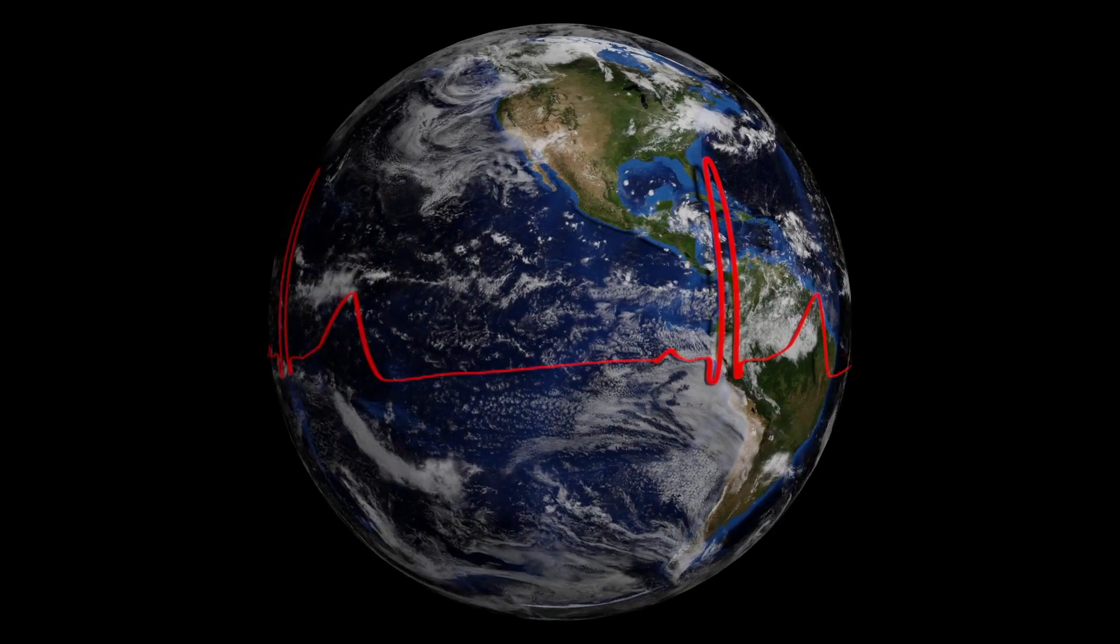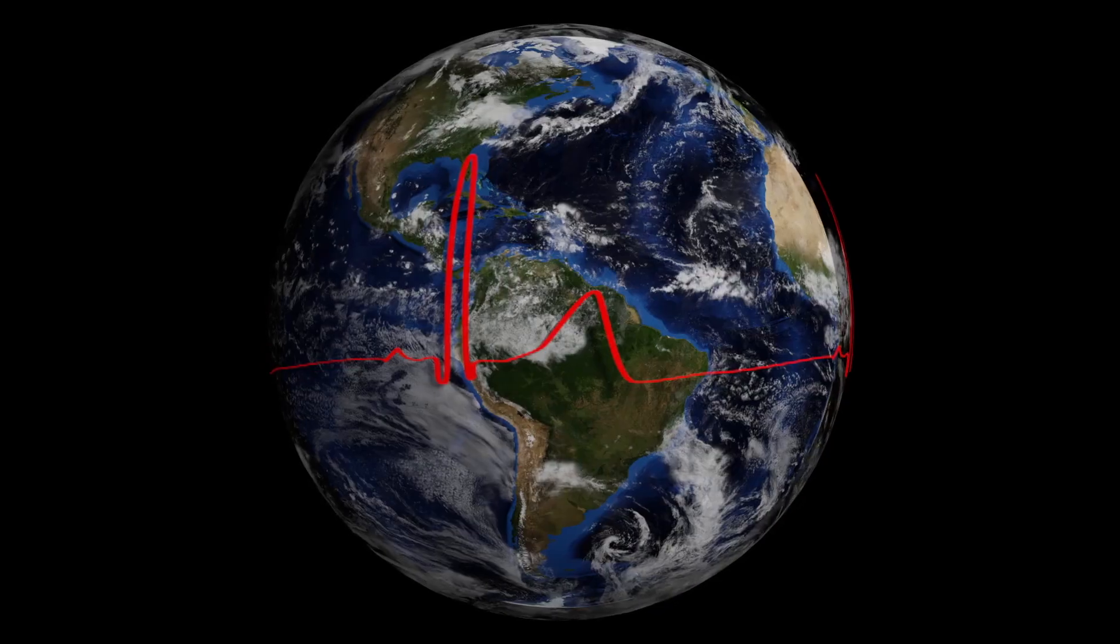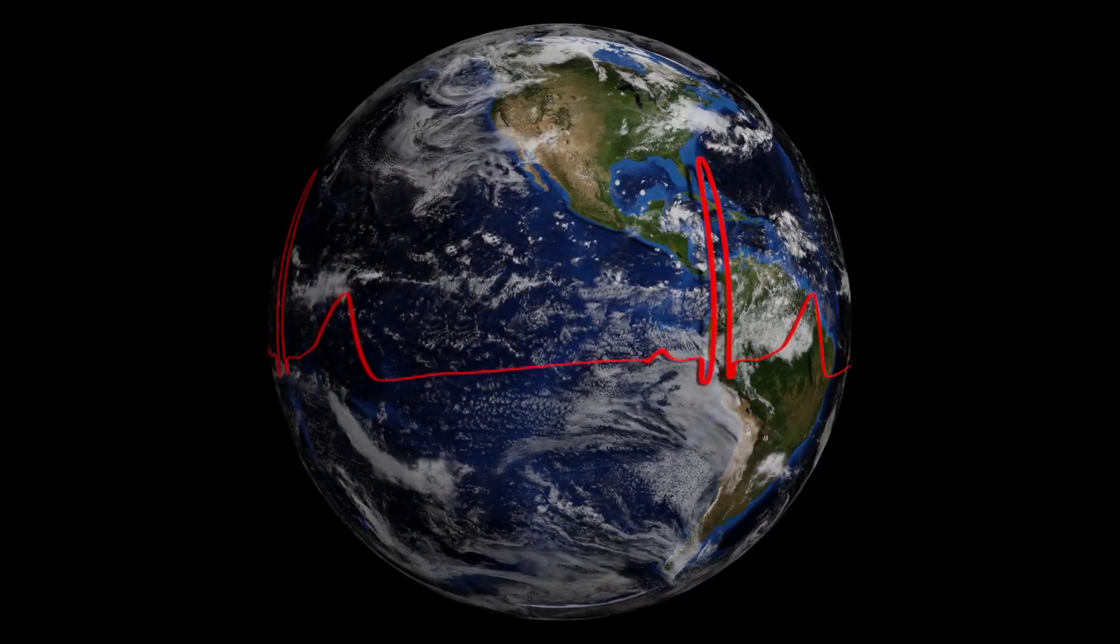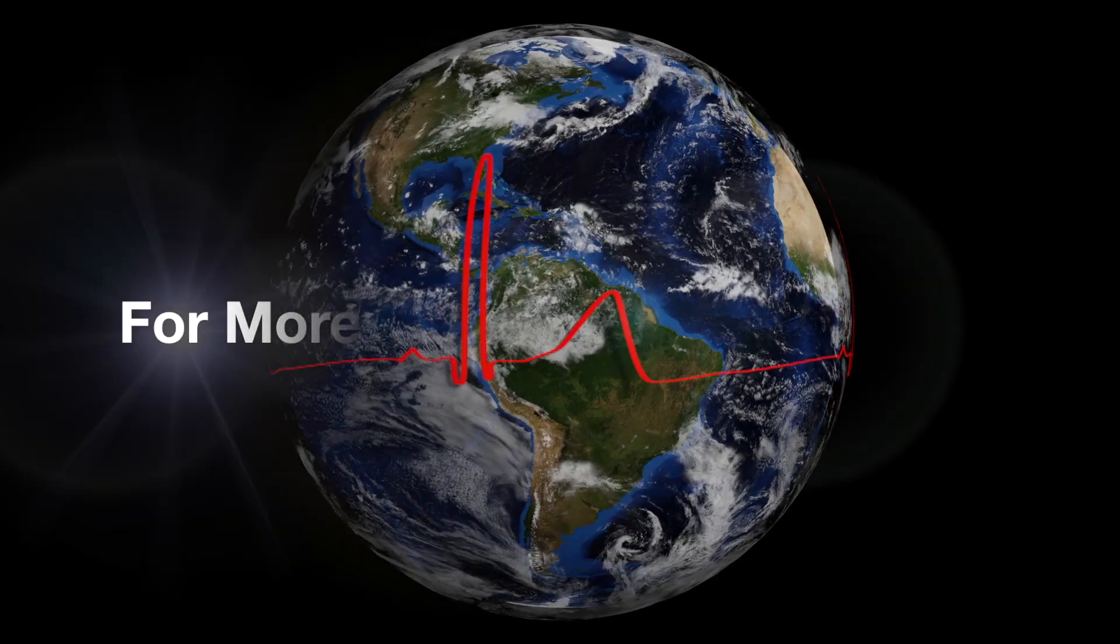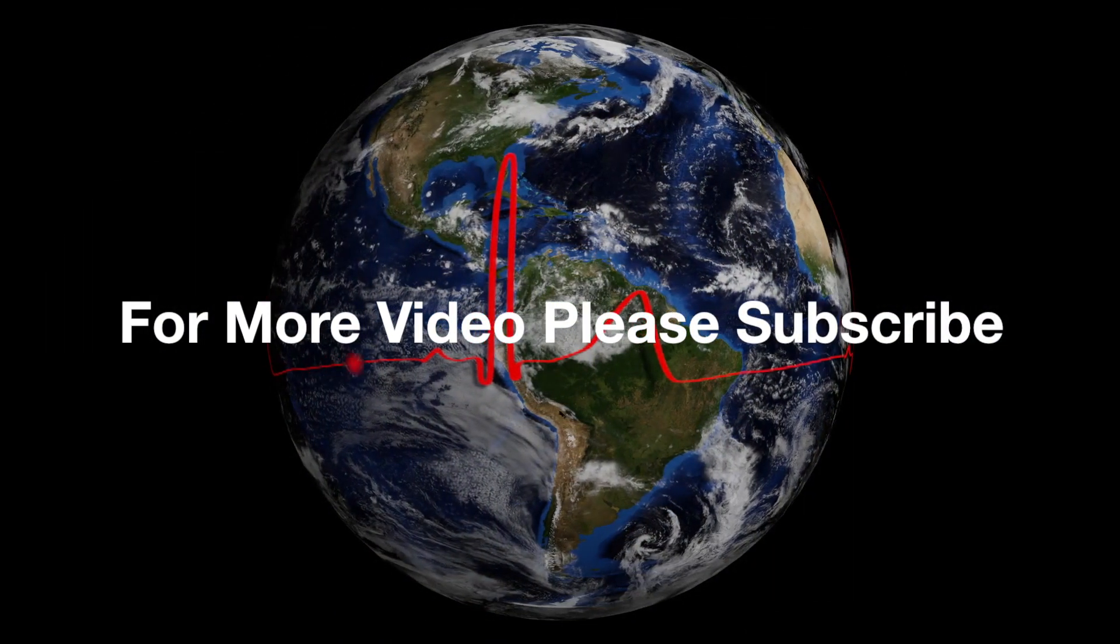graphite, a form of uncombined carbon, is sometimes found, and some authorities consider that it may have been separated out from combination through the vital activities of unknown living things.